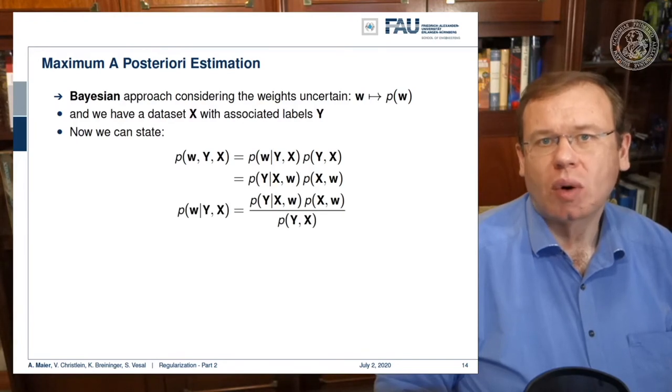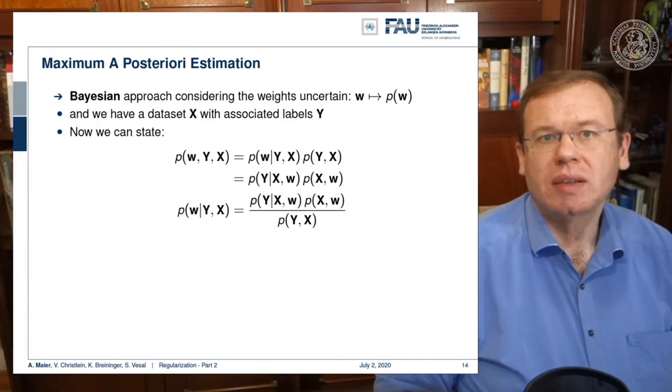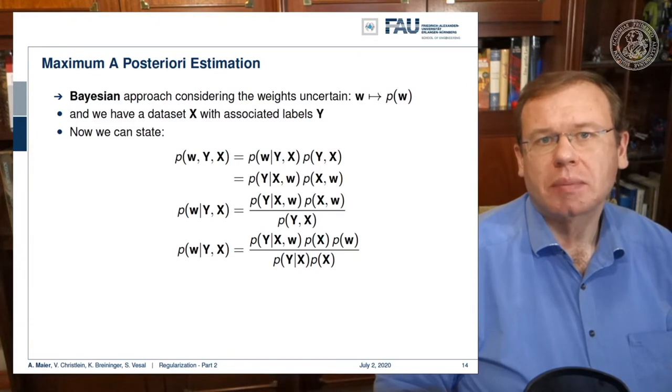We can reformulate that into the probability p of y given x and w times the probability of p of x and w. From these equalities, we can derive the Bayes theorem that the conditional probability p of w given y and x can be expressed as the probability p of y given x, w times the probability p of x and w divided by the probability of p of y and x.